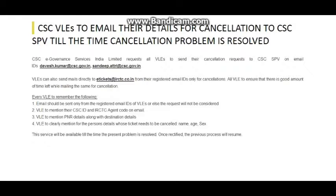You need to include the name, age, and sex of the passenger. So there are 4 things to add in the mail: the registered email address, CSCID or IRCTC agent code, the details of the PNR and destination including where the travel is going, and the details of the person — name, age, and sex.